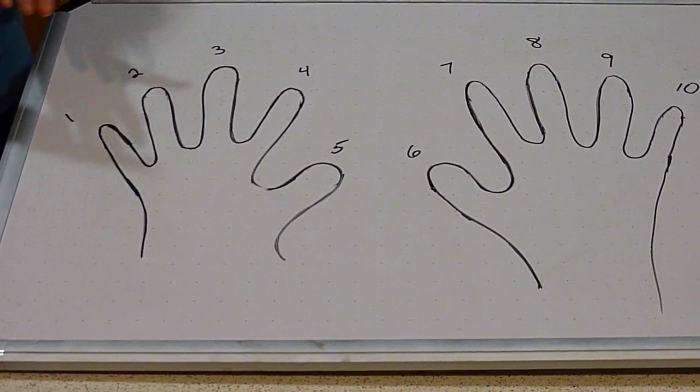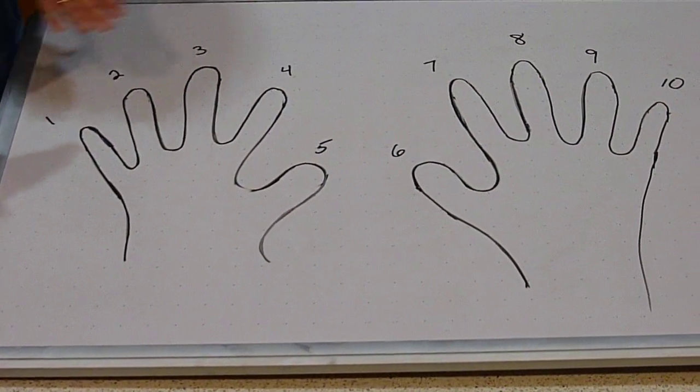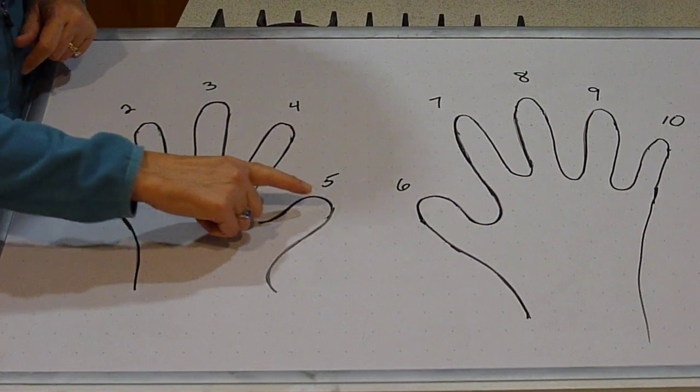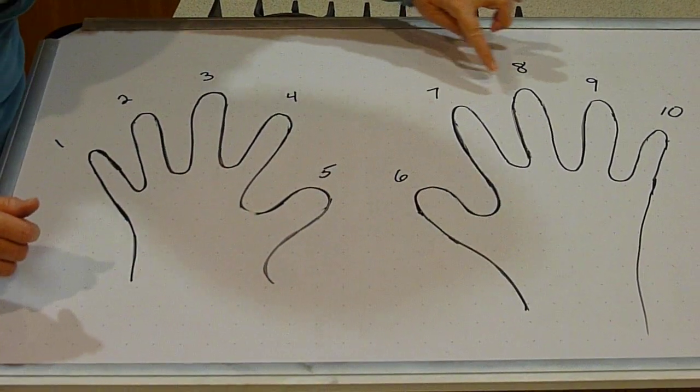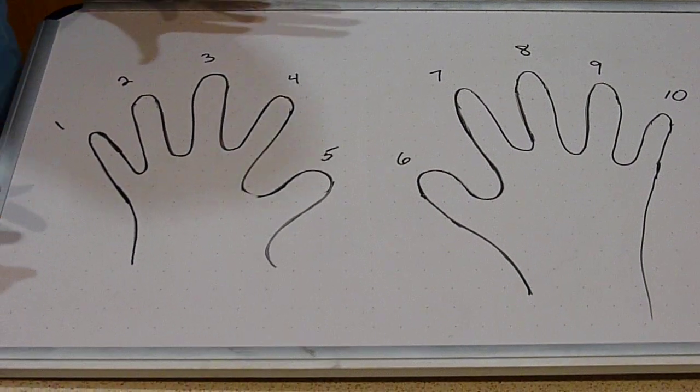Then I make sure that they can say that chant just like I did, and what it is is I tell them we go quick, quick, quick, quick. Then we give a double beat for each of the thumbs, and then quick, quick, quick, quick twice. So I'll say it again for you.